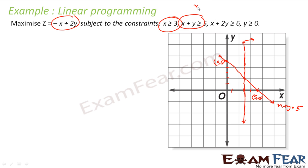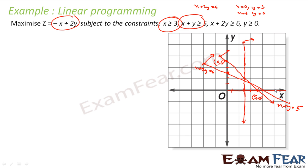For x + 2y ≥ 6: putting (0, 0) gives 0 + 0 = 0 which is not greater than 6, so the feasible region is on the side away from the origin. For x + y ≤ 5, putting (0, 0) gives 0 which is less than 5, so the feasible region is on the origin side. Also, y ≥ 0 means we take the region above the x-axis. Adding all these constraints gives the feasible area.